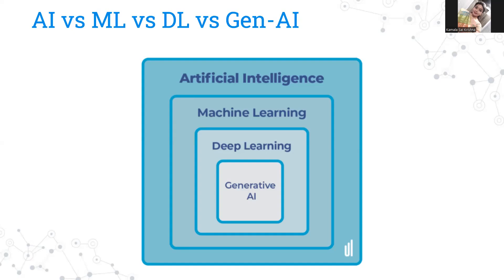Customer service has also improved greatly — even automatic calls can now understand our voice. Vast advancements are happening on the Generative AI side. The main difference, to make it very simple: all previous approaches used existing data to make decisions, whereas Generative AI generates new data. That is the key difference between all these terms.